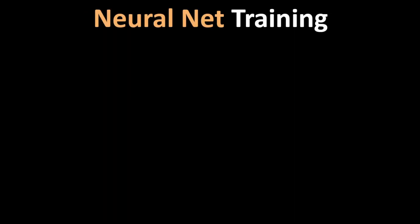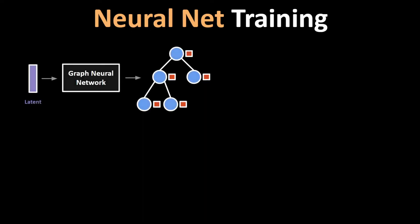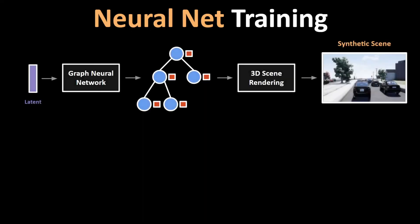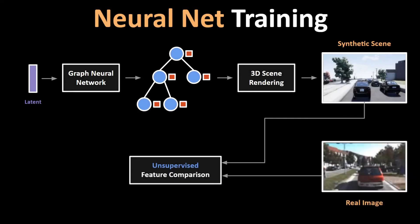The neural network used to learn this graph is — a graph neural network. The scene generated by this method is rendered in 3D, and this image rendering is compared to real images in an unsupervised fashion by comparing them in the feature space of a convolutional neural network. This encourages the network to produce scenes as close to real life as possible and also provides a reward signal for the graph neural network, which is trained in a reinforcement learning setting.